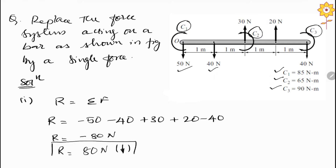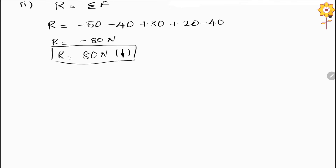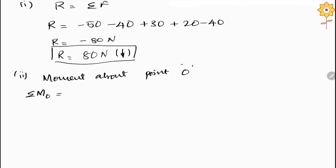We can also write R = 80 Newton in the downward direction, since the negative sign indicates downward. That completes the first step. The second step is to find the moment about point O, that is, summation of M about point O.